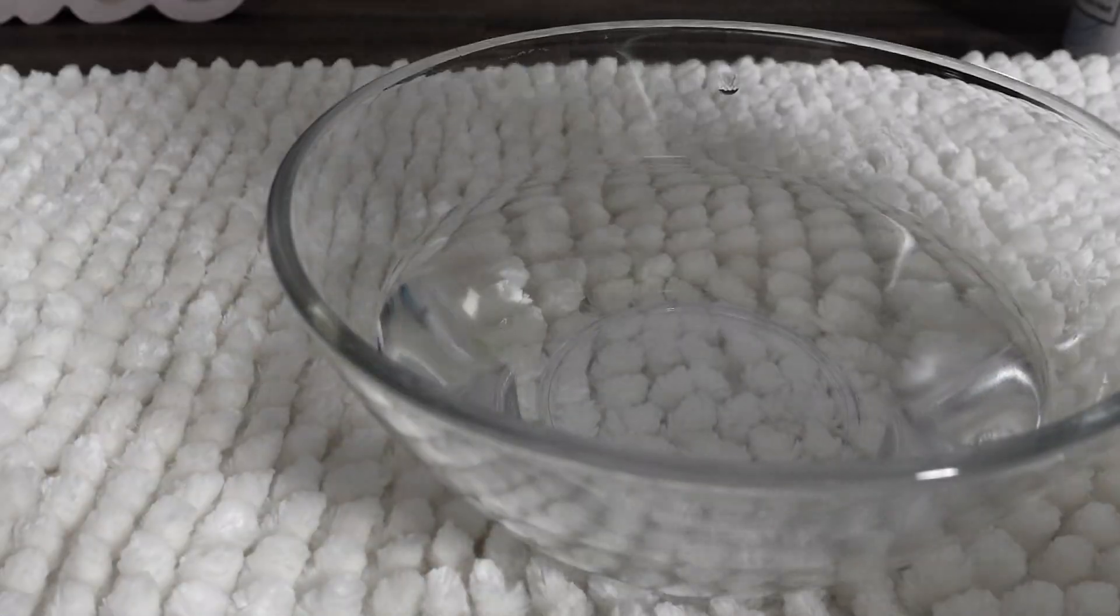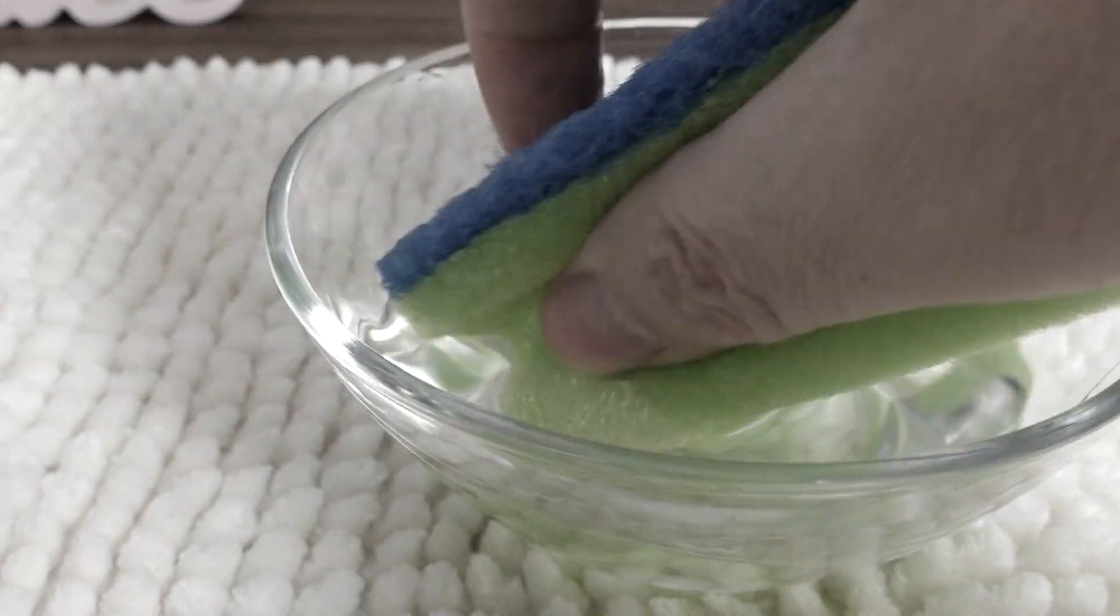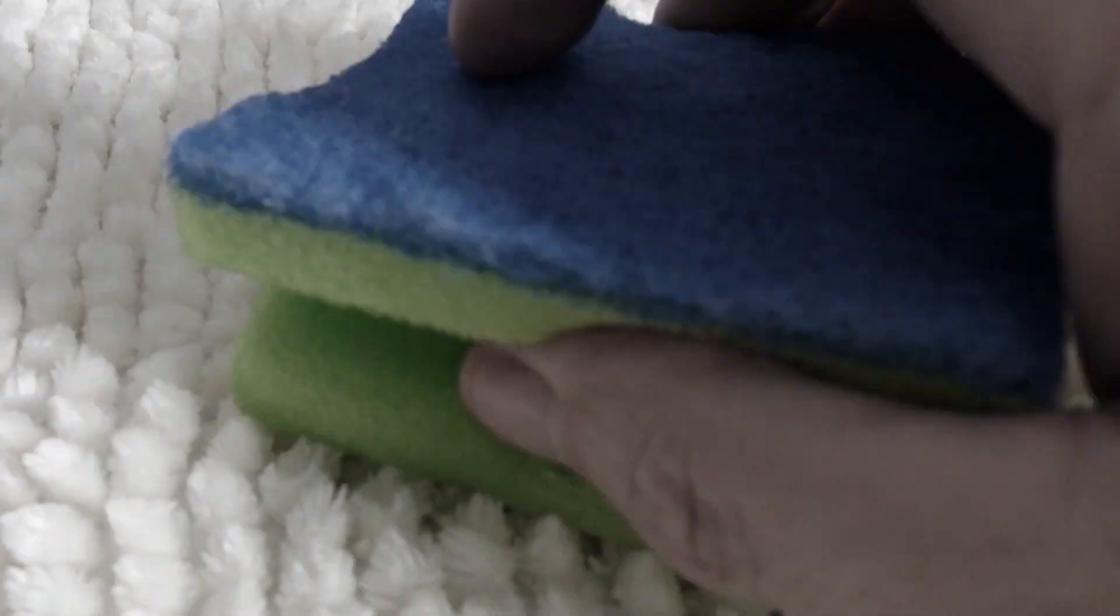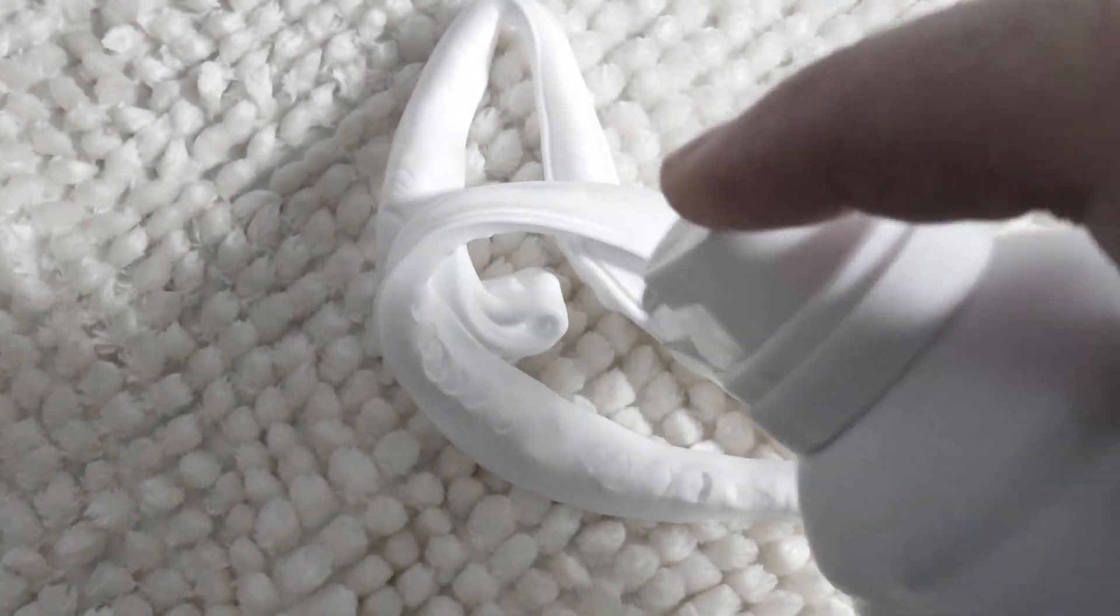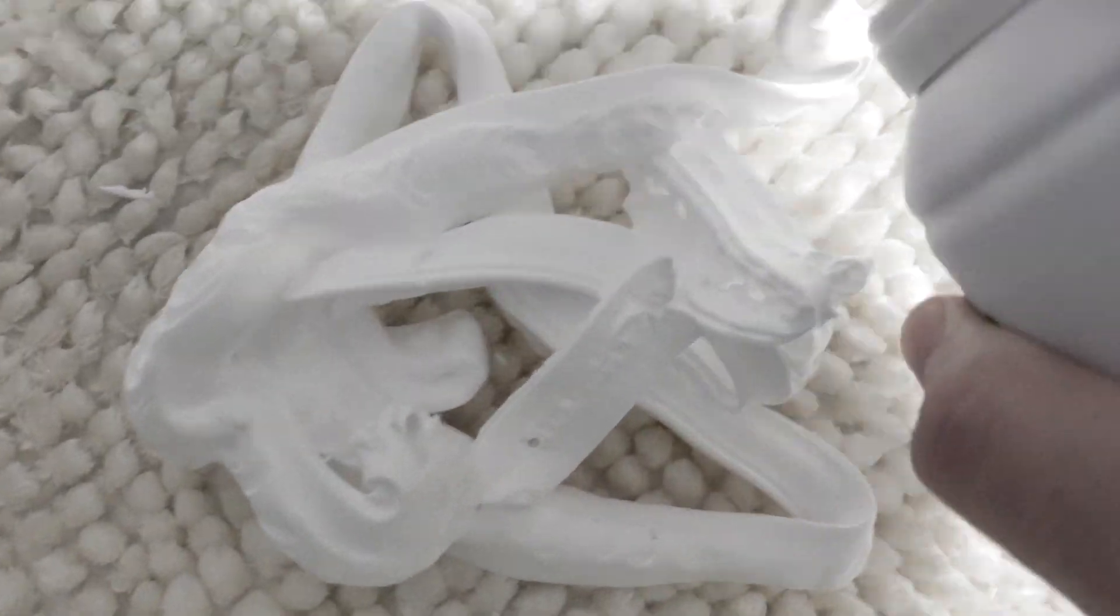First, wet the area around the stain with warm water. This will help loosen the dirt and stains. There are several advantages to cleaning your carpet with shaving cream. First, it's very effective at removing stains. Apply a generous amount of shaving cream to the stain. Be sure to cover the entire stained area.